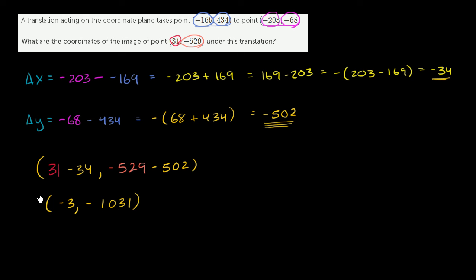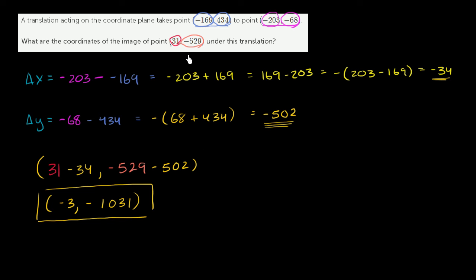So that is where we end up. We end up at the point negative 3 comma negative 1,031 — this point gets mapped to this point under this translation.